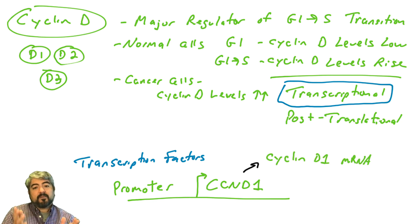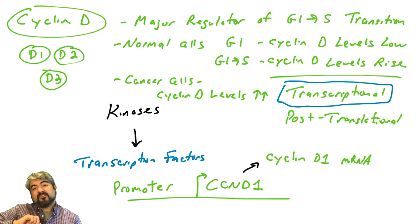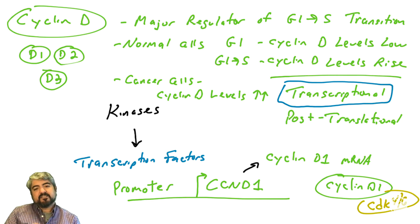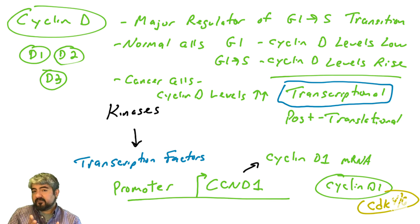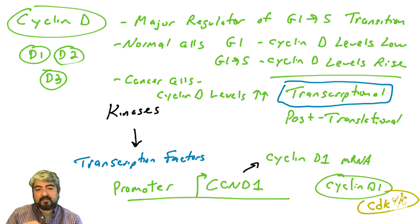We're talking about regulating cyclin D at the gene level. What regulates transcription factors? In this video, we're going to focus on kinases that we've covered in previous videos. When the cyclin D protein is produced, it joins with CDK4 and 6 to phosphorylate a very specific protein called RB, driving the cell through the cell cycle. But this video focuses on the cyclin D gene and how it is regulated.